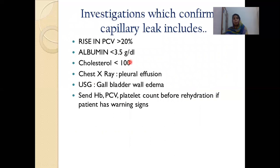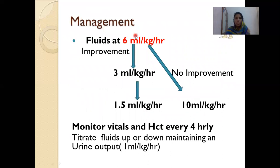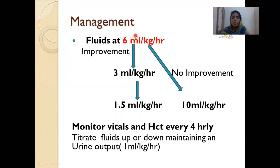Investigations confirming capillary leak: hemoconcentration — PCV rise of more than 20% from baseline; hypoalbuminemia less than 3.5 g/dL; hypocholesterolemia less than 100 mg/dL — all because of fluid leaking out. Chest X-ray will show pleural effusion; POCUS will show gallbladder wall edema. Always send hemoglobin, PCV, and platelets before rehydration for a baseline. Fluids for a child with warning signs should be started at 6 mL per kg per hour.